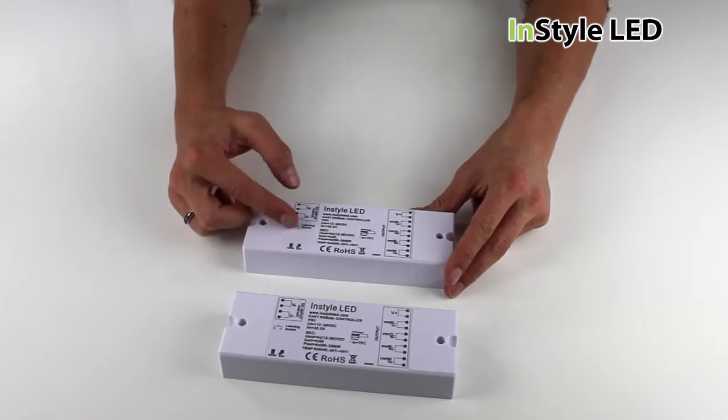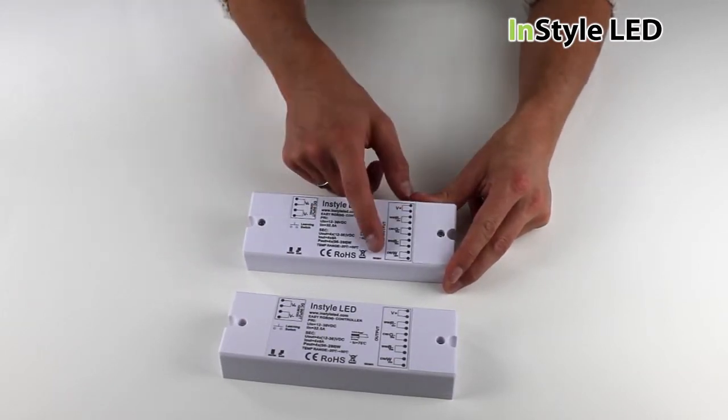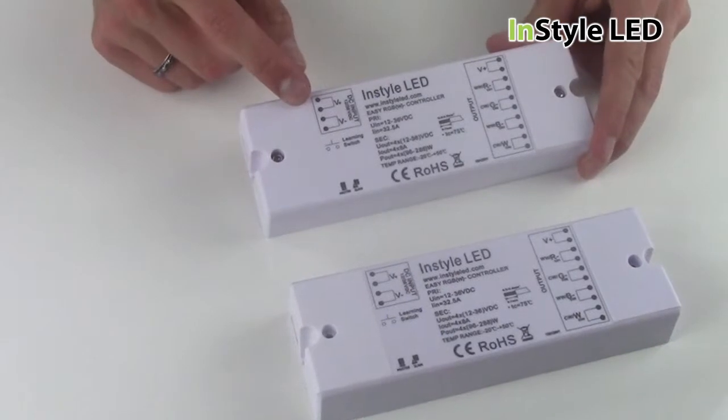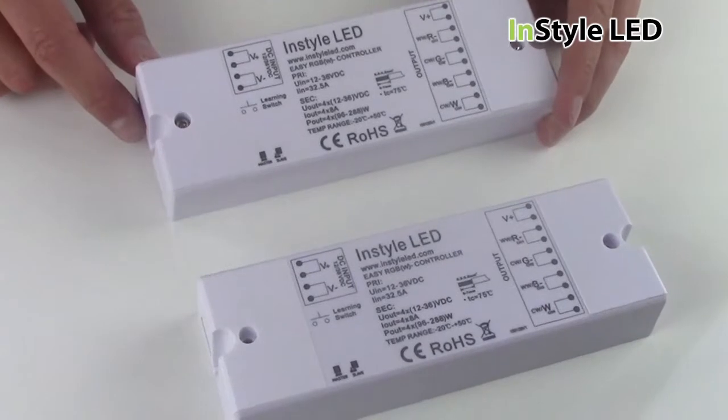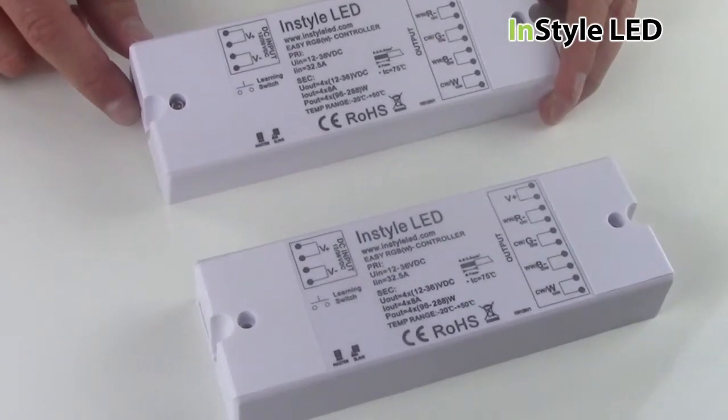The receivers will work with either 12V or 24V and have a maximum output of 4x8A. That is a maximum of 288W per channel for 24V and 144W per channel for 12V.